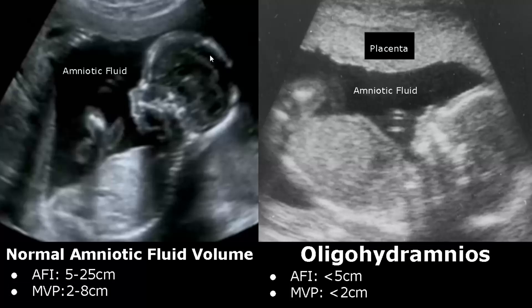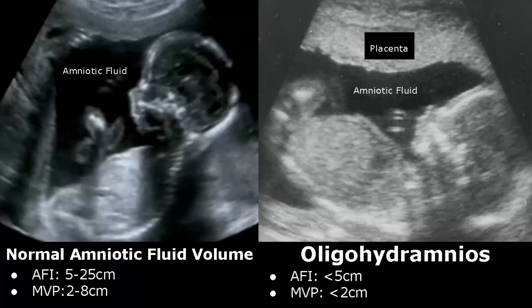This image is of Oligohydramnios, in which there is a low amount of Amniotic Fluid. We can see a reduced amount of fluid around the fetus compared to the normal image. The AFI value will be less than 5 cm and the MVP value will be less than 2 cm for Oligohydramnios.